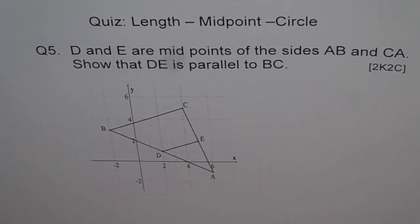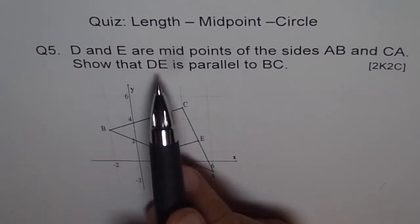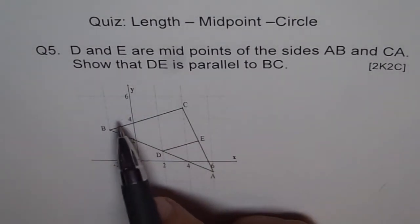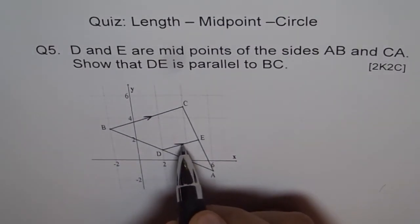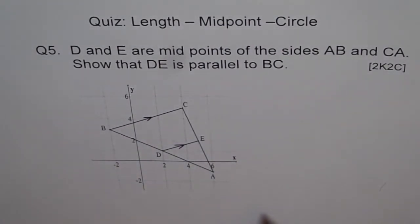Here is my suggestion. We need to show that DE is parallel to BC, right? Let's say they are parallel. This is what we want to show. And we know D and E are midpoints. So first let's find D and E. These points are all given on the graph. We can read from here what is A, what is B and all those things.